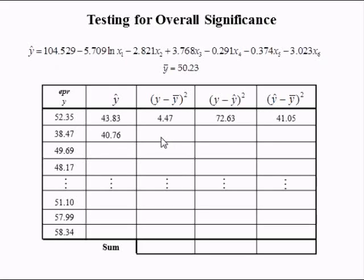The second squared deviation between the observed value y and its sample mean is found by taking 38.47, subtracting 50.23, and squaring, which yields 138.45.